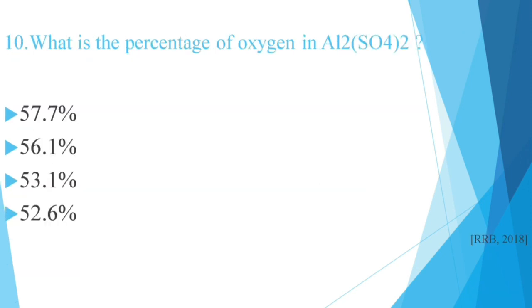The last question: What is the percentage of oxygen in Al2(SO4)3? Options: 57.7%, 56.1%, 53.1%, 52.6%. This question is RRB 2018. The correct answer is 56.1%. Thank you.